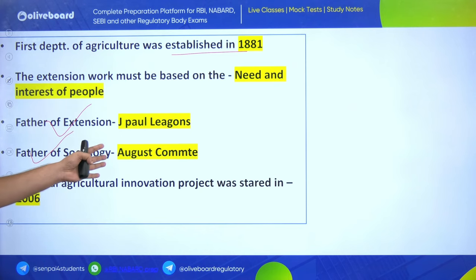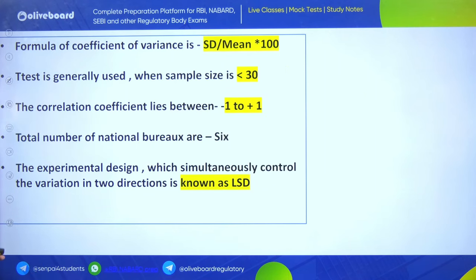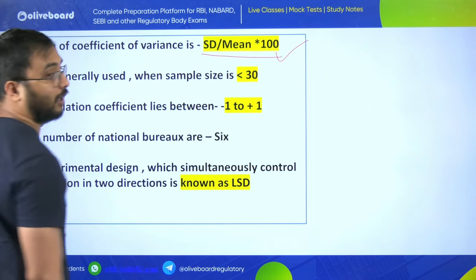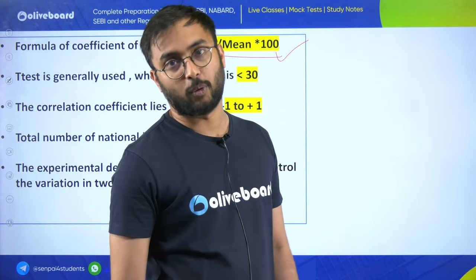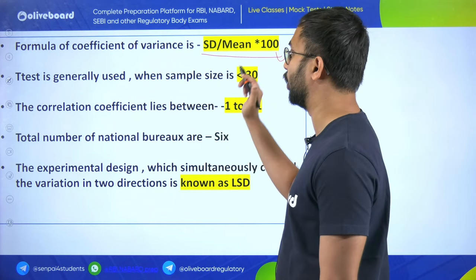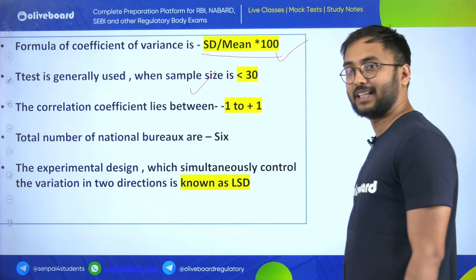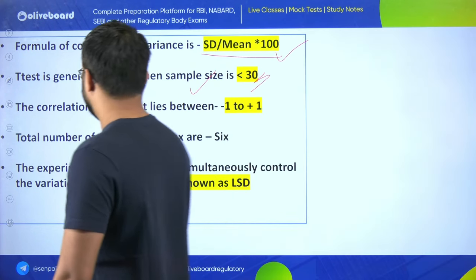National Agriculture Innovation Project was started in 2006. Formula of coefficient of variance is SD upon mean multiplied by 100. Not that important from NABARD and AFO point of view, but important for other agriculture exams. T-test is generally used when sample size is less than 30 - remember this number.